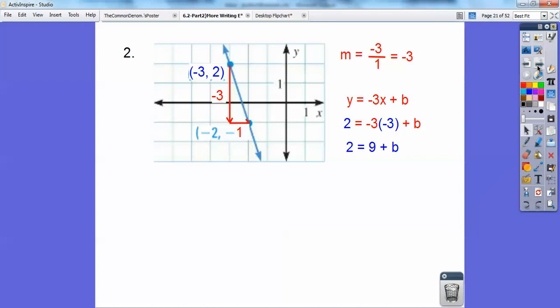So you get positive 9. Negative 3 times negative 3 is positive 9. Subtract 9 on both sides, and you get negative 7. That goes back up into the equation. So the equation is y equals negative 3x minus 7.